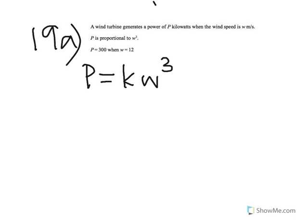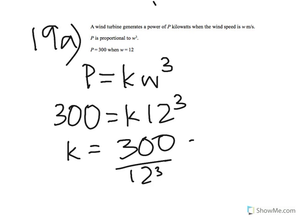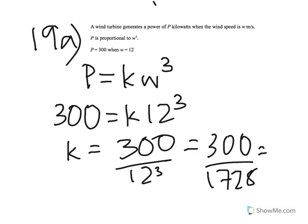They've given us values of P and W, which helps us find K. P is 300 when W is 12, so 300 equals K times 12 cubed. Therefore K is 300 divided by 12 cubed, which is 300 over 1728, which simplifies to 25 over 144.